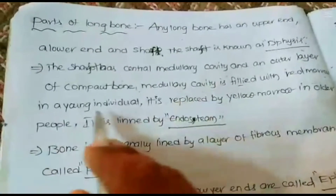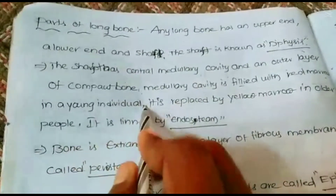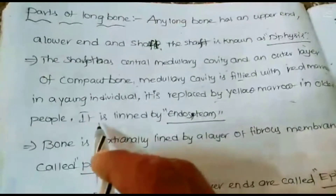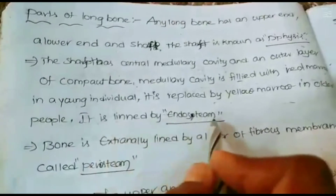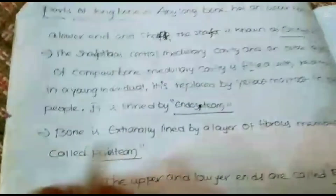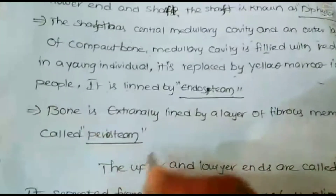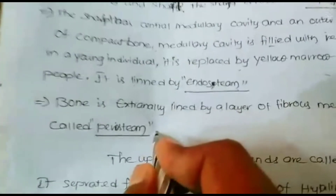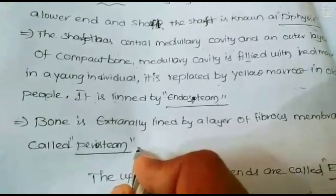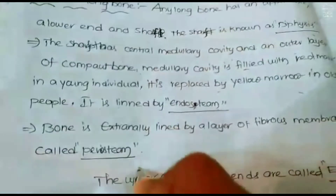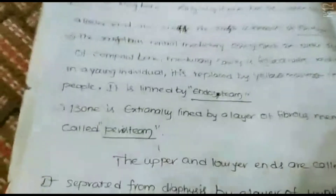In young individuals, the red bone marrow is replaced by yellow bone marrow. The medullary cavity is lined by the endosteum. Externally, the bone is covered by a layer of fibrous membrane called the periosteum.